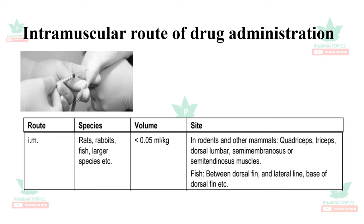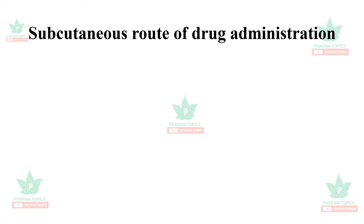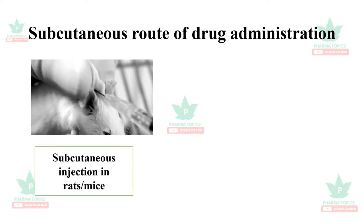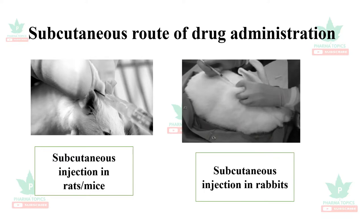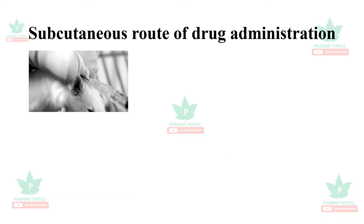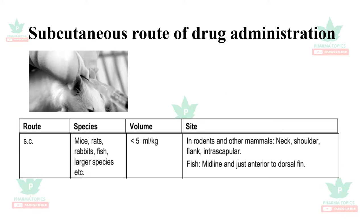The subcutaneous route of drug administration: in case of rats and mice, the skin is pinched up and the drug is administered in the space beneath. It can be administered in mice, rats, rabbits, fish, and larger species at a volume of less than 5 ml per kg in rodents and mammals. The neck, shoulder, flank, and intrascapular regions are used. In case of fishes, the midline just anterior to the dorsal fin is used.